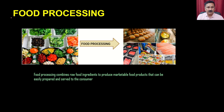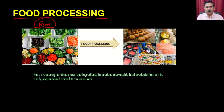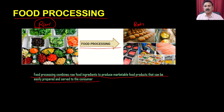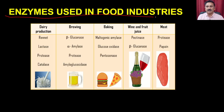In food processing, you take the raw material — vegetables, milk, meat, or anything — and you do the food processing to generate different types of products. The food processing combines raw materials to produce a marketable food product that can be easily prepared and served to the customer. The different types of enzymes used in the food industry include the dairy industry, brewing industry, baking industry, wine and fruit juice industry, and meat industry.